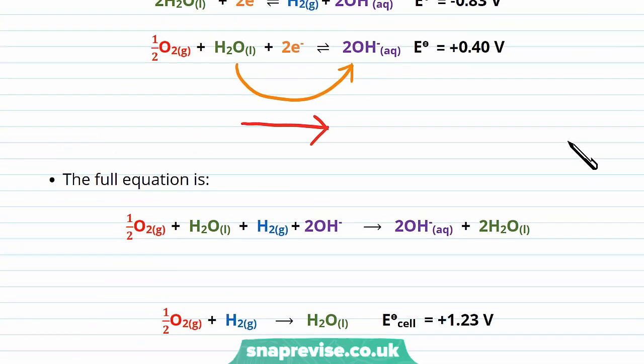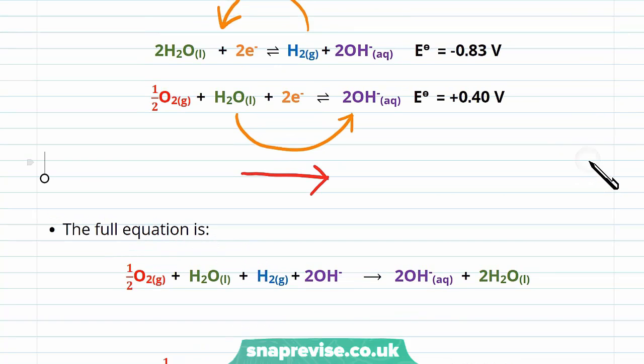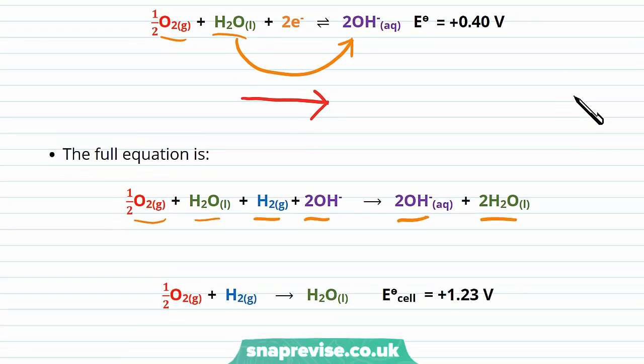Here we've just taken everything and put it together into one equation without the electrons, so we've taken the oxygen and the water here and here to form these parts of the equation, and we've taken the hydrogen, because this reaction goes from right to left, and the OH- ions, and then the products are the OH- ions formed on the oxygen side and the water formed on the hydrogen side. At this point,